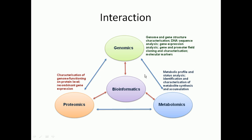The interactions among all these disciplines: genomics covers DNA and RNA structure, genome characterization, DNA sequence analysis, gene expression, cloning, characterization, and molecular markers. Proteomics covers characterization of genome function at the protein level and analysis of genome expression in proteins. Metabolomics covers metabolic profiles, status analysis of metabolic pathways, and metabolic synthesis and accumulation. Importantly, genomics and transcriptomics ultimately rely on bioinformatic analysis, as bioinformatics is the tool that connects all of these together and gives a solid understanding of what is going on inside the cell.